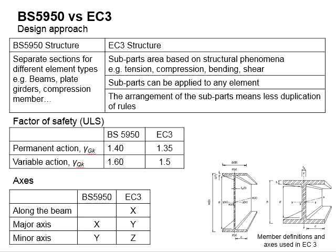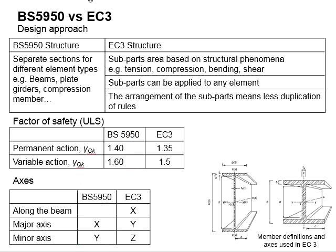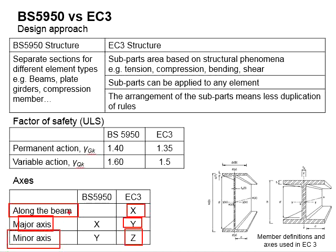Next, regarding the axis notation of steel members, the notation differs between Eurocode 3 and BS5950. BS considers the major axis as x-x and the minor axis as y-y. However, in Eurocode 3, x is the axis along the member, y is the major axis, and z is the minor axis.